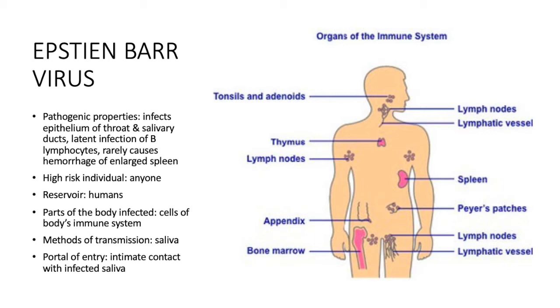High-risk individuals would be anyone. Reservoirs are humans. Parts of the body infected would be cells of the body's immune system.